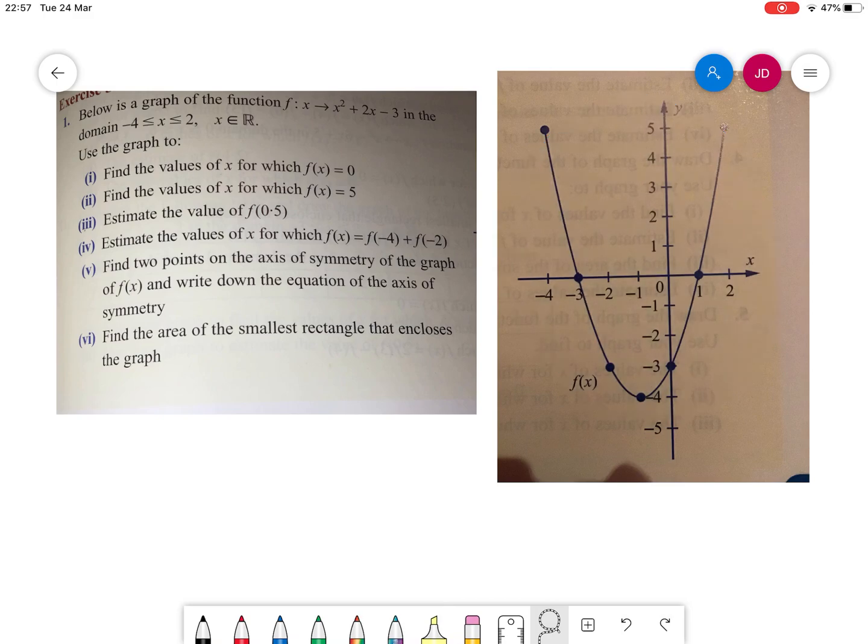In this case, the graph has been drawn for us already, although sometimes we'll have to use our domain as inputs, put them into the function to find our outputs, and draw the graph ourselves.